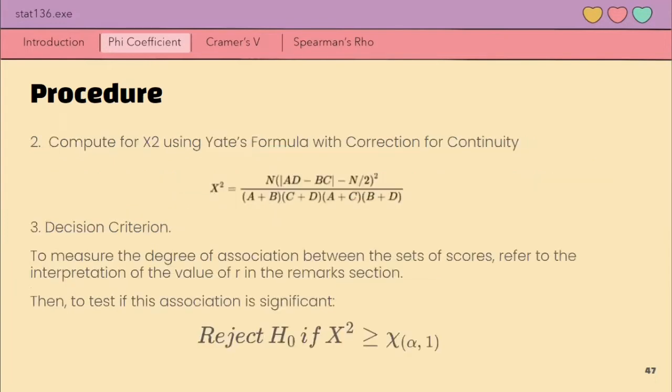Then, we will compute for the test statistic X square formula wherein incorporated na yung correction for continuity since this is for a 2 by 2 data. For our decision criteria, meron tayong two parts. First, we will interpret the phi coefficient. Yung interpretation niya will be found in the remark section. Same lang naman ang interpretation sa Cramer's.